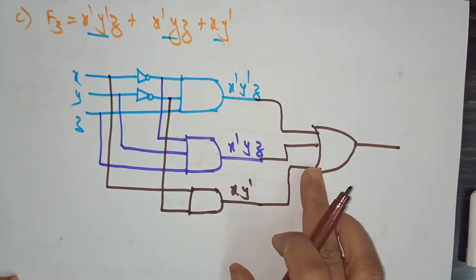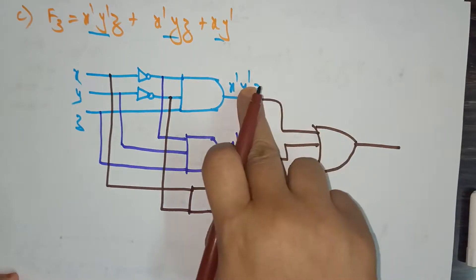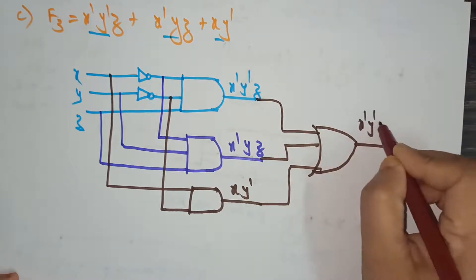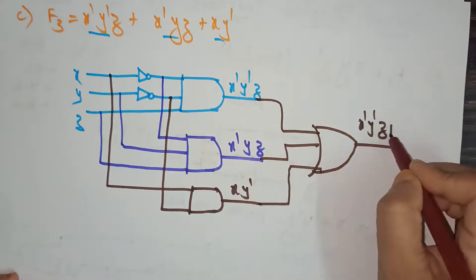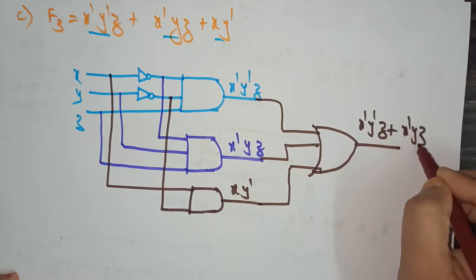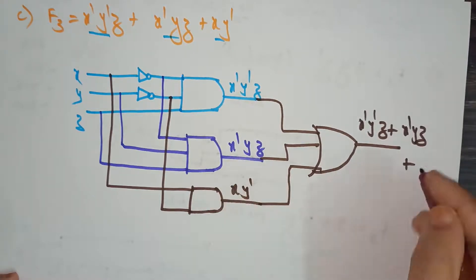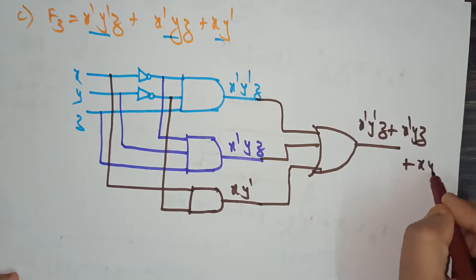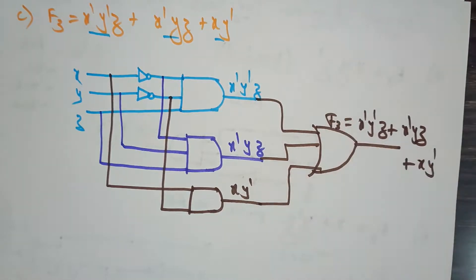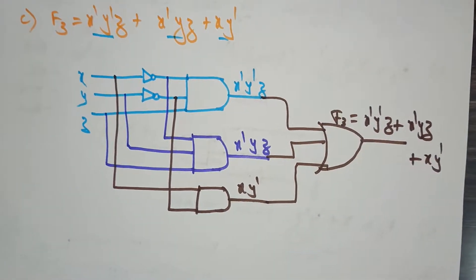All three inputs — x'y'z, x'yz, and xy' — are connected to an OR gate, giving the final output F3.